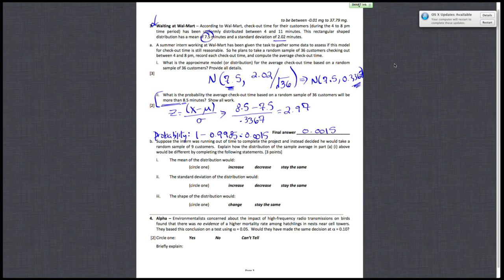Okay, so part B is just asking about various properties of the sampling distribution if you instead took a random sample of 9 customers instead of 36. So if you took 9 customers instead of 36, the mean of the distribution would stay the same. The mean is just your population mean, so it doesn't change with sample size. Your standard deviation of the distribution would increase because since the formula for standard deviation is the population standard deviation divided by your sample size, as your sample size decreases, your standard deviation for the sampling distribution increases. And then the shape of the distribution would change. If your standard deviation increases, then obviously the shape of your distribution changes.